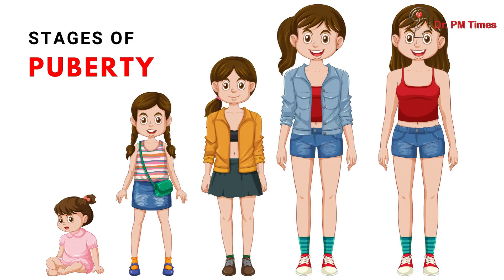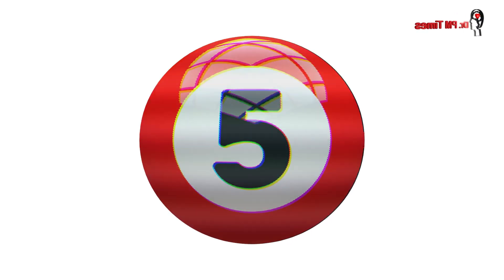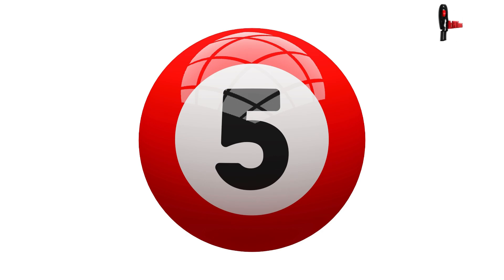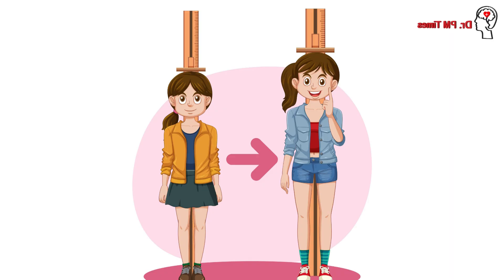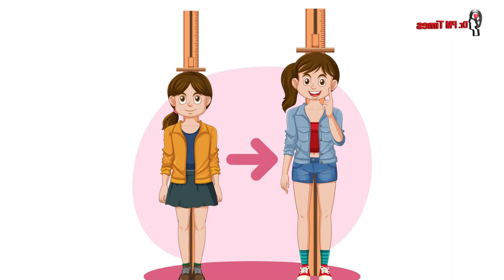There are five stages of puberty. The first stage is a sudden increase in growth spurt and development of the child physically, occurring between eight to nine years. That is the first obvious change.